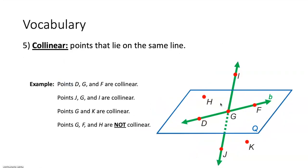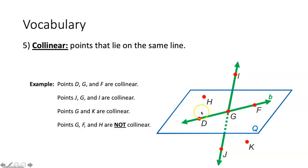Collinear means points that lie on the same line. Points D, G, and F are collinear because they all lie on the same green line. Points J, G, and I are collinear — they lie on the same line. Points G and K are collinear — even though there's no line drawn through them, any two points can have a line drawn through them, so any two points are collinear. Points G, F, and H would not be collinear because you cannot draw one line going through those three points.